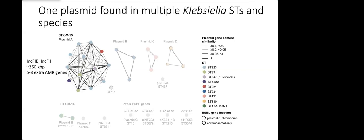It carried five to eight additional AMR genes on top of the CTX-M-15 and you can see by the different colors here in this little network is that it's present in multiple sequence types. In fact, the light purple dot actually represents a different Klebsiella species called Klebsiella variicola.